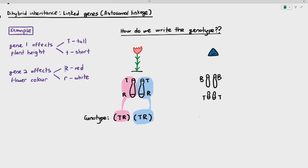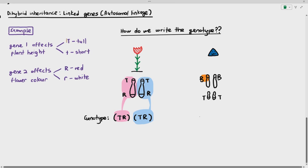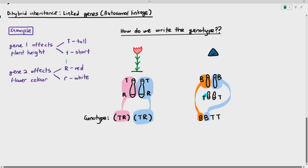For unlinked genes, we write it as large B large B large T large T — no brackets required because the alleles are on different chromosomes. So the key difference: for linked genes use brackets with alleles of the same chromosome grouped together; for unlinked genes, no brackets are needed.